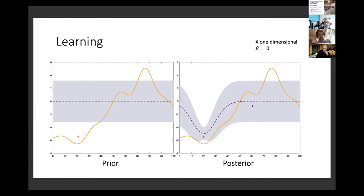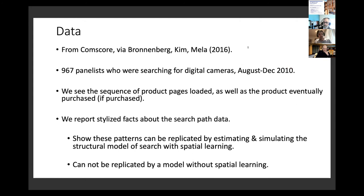We apply this model to data on consumer search from Comscore, previously used by Bronnenberg, Kim, and Mellow. We see about a thousand panelists searching for digital cameras online, observing the sequence of product pages they view and the product they ultimately purchase.